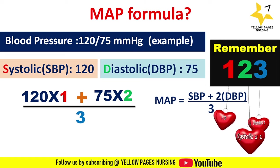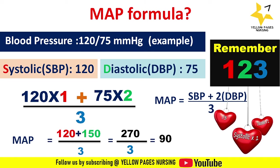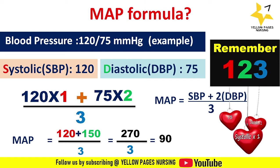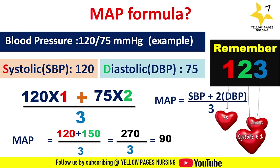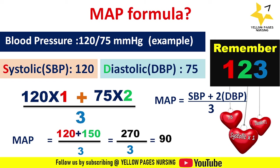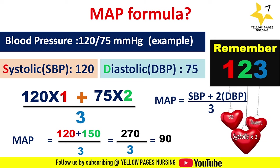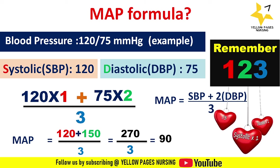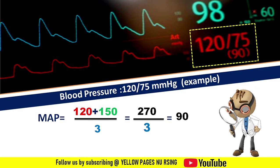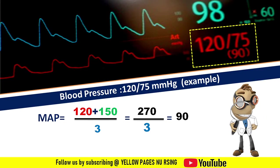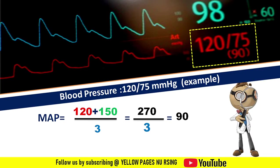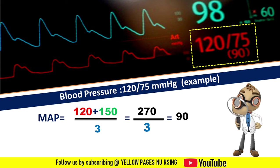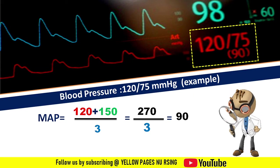Applying the values into the formula, the mean arterial pressure is 90 mmHg. This formula is easier to remember using the 1-2-3 mnemonic. Here we can see a picture of a patient on invasive monitoring of blood pressure, showing the systolic, diastolic, and mean arterial pressure.